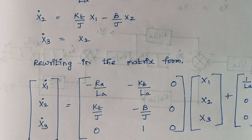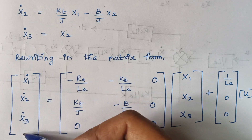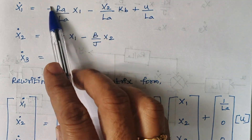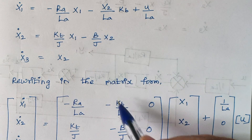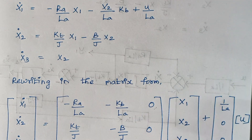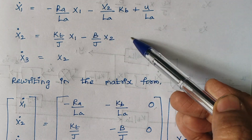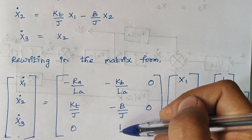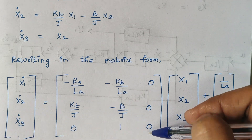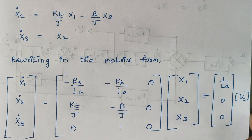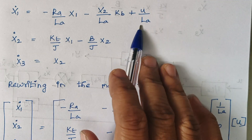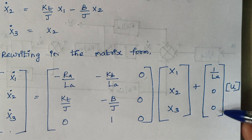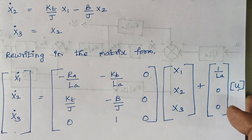We now rewrite the state equations in matrix form with three state variables. The coefficient of X1 in X1 dot is −RA/LA, the coefficient of X2 is −KB/LA, and X3 is 0. For X2 dot, write the X1 coefficient (KT/J), X2 coefficient (−B/J), and X3 is 0. For X3 dot, only X2 appears with coefficient 1, so the remaining terms are 0. The input matrix has 1/LA as the coefficient of U for X1 dot, and 0 for the others.